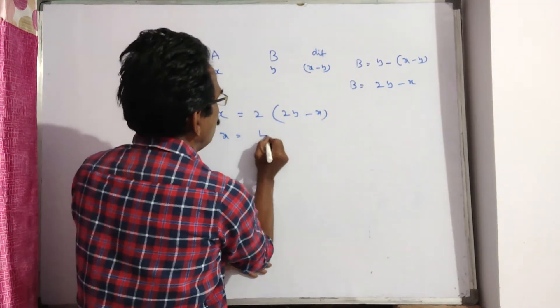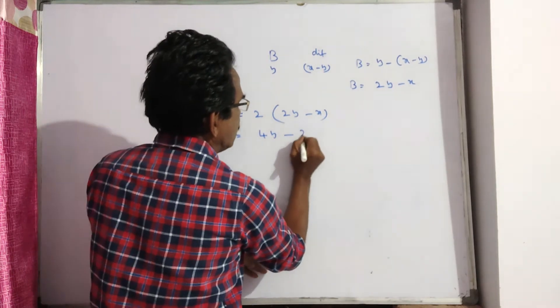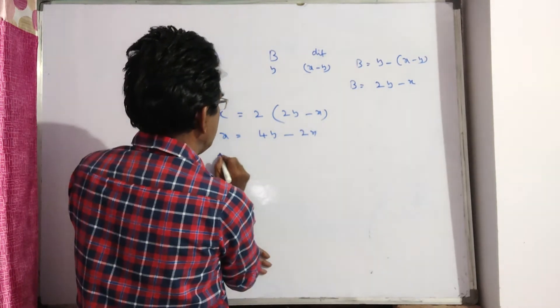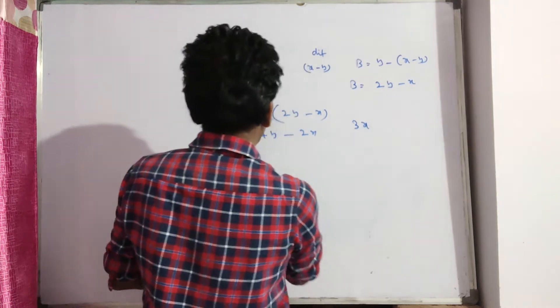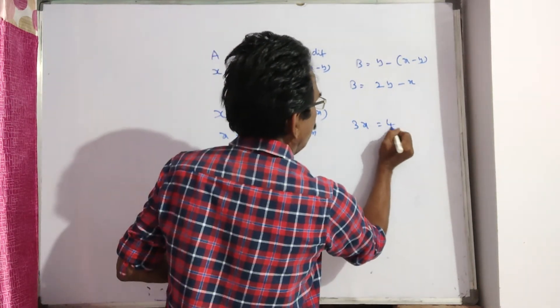So X is equal to 4Y minus 2X. It implies 3X is equal to 4Y.